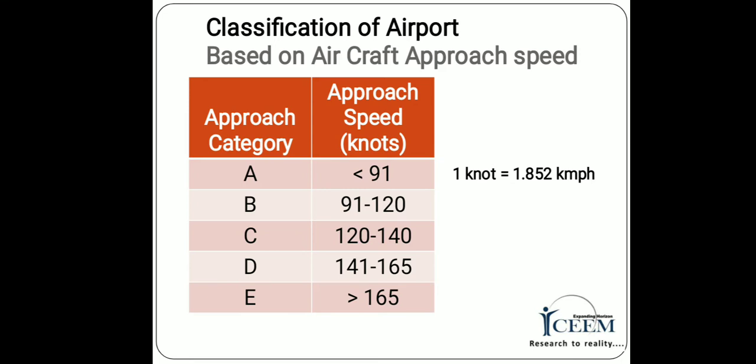The next classification is based on aircraft approach speed, in which airports are classified into 5 types: A, B, C, D and E. For type A, the approach speed is less than 91 knots. For types B, C, D and E, the approach speeds vary accordingly. One knot is equal to 1.852 km per hour.